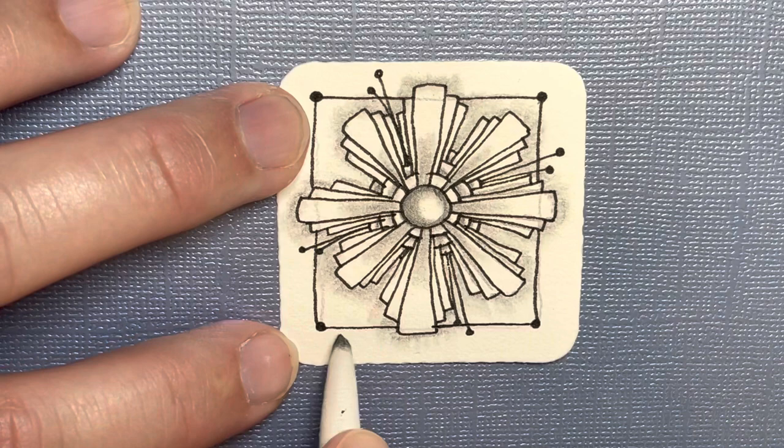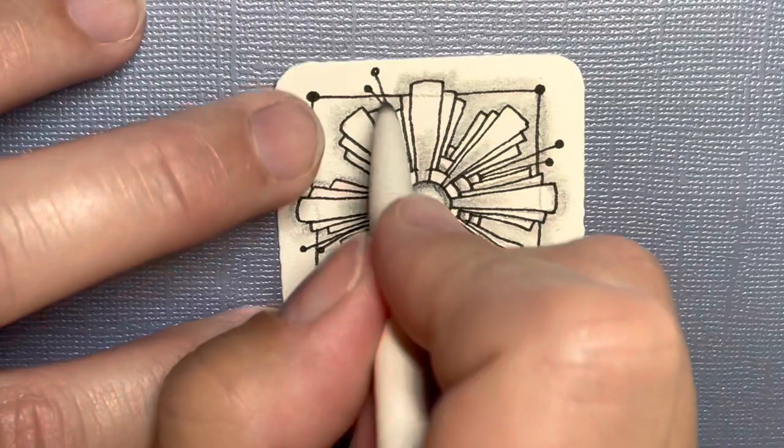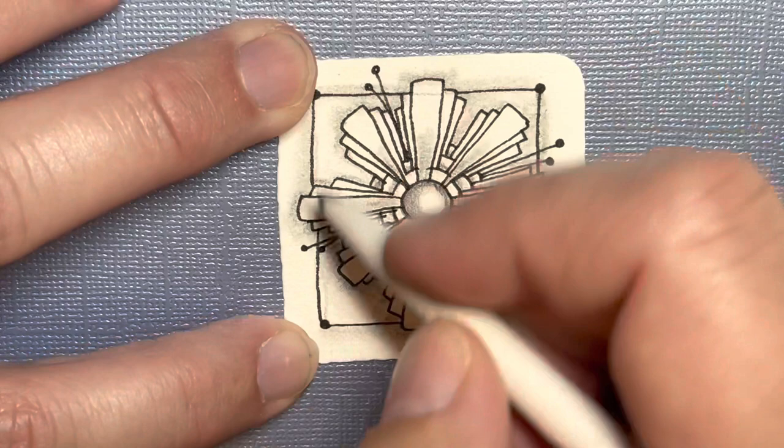I think that looks pretty. And now my tortillon has some graphite on it still so I like to just go around the outside edge of this frame. I just like the way that looks.